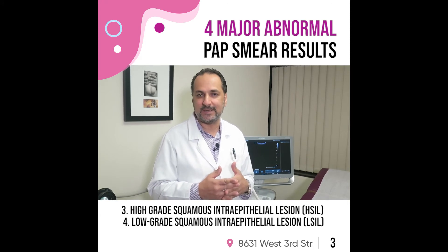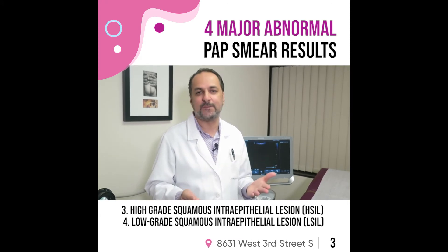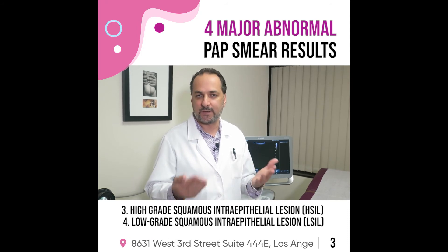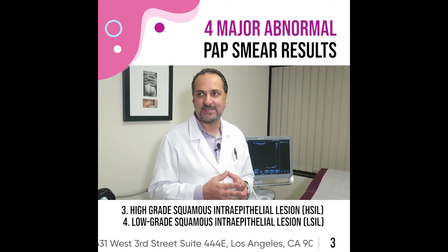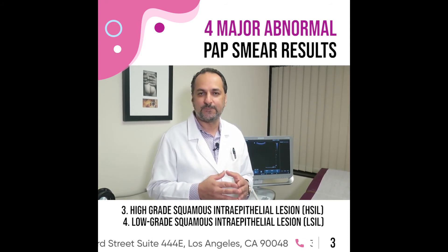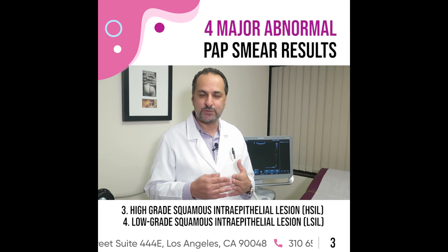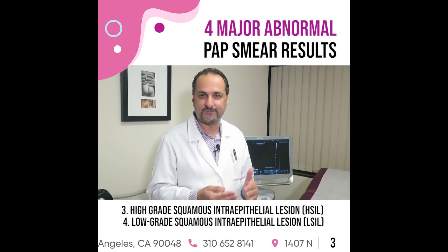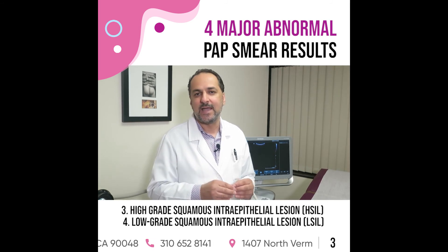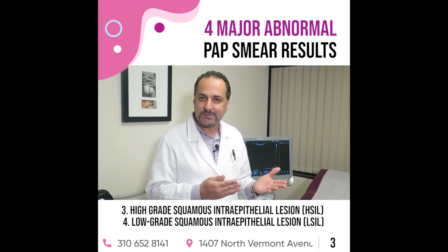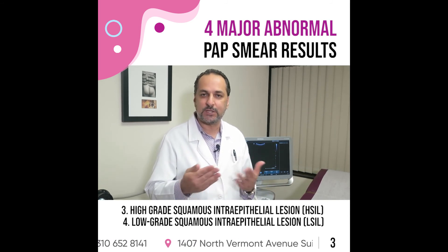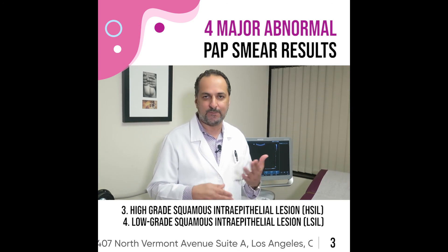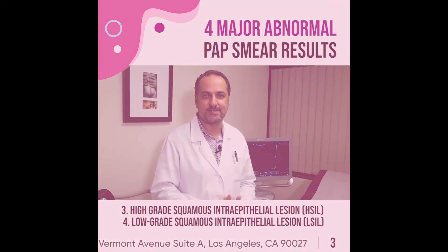For CIN2 and CIN3, which are precancerous, I do recommend — after being confirmed by colposcopy — doing something called a LEEP procedure. LEEP stands for L-E-E-P. It is a procedure done usually in the hospital; it is essentially a large biopsy of the tip of the cervix, about one centimeter thick. This gives us a diagnosis and also cures the problem. After a LEEP procedure, you usually need another pap smear or follow-up in three to six months.